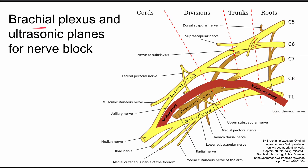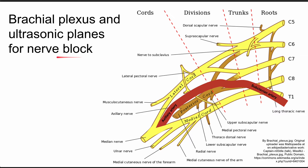This is a summary of the brachial plexus. We'll talk about the different parts of the brachial plexus from the roots to the trunks to the divisions and lastly the cords and the nerves that are most familiar after the cords. We'll also briefly touch on the ultrasonic planes that can be used for nerve block of the brachial plexus.